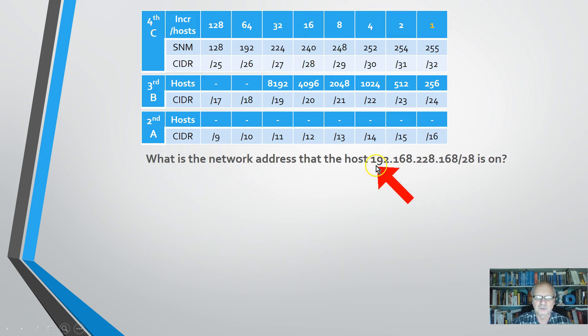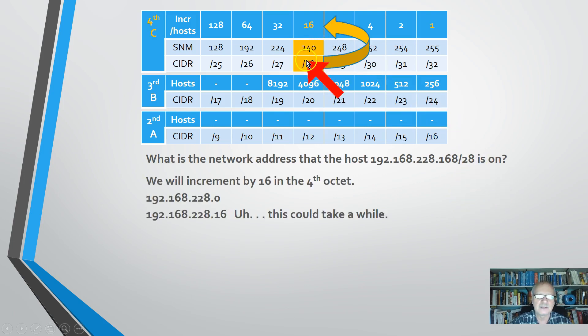On this one, we're going to look at 192.168.228.168 slash 28. What network is that on? Well, we're dealing with slash 28, so we're right here. So let's color that in and see that we are going to increment the fourth octet by 16. The fourth octet because that's what this one is in.